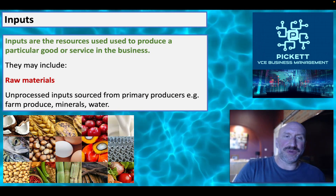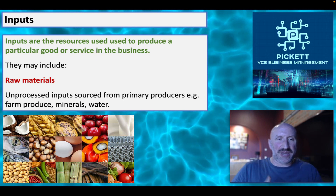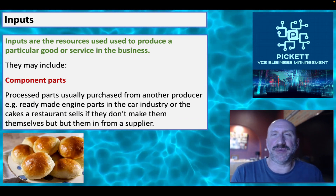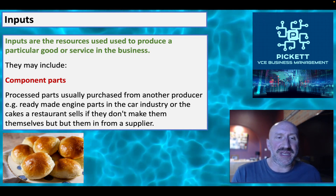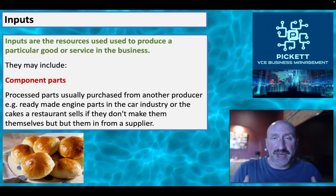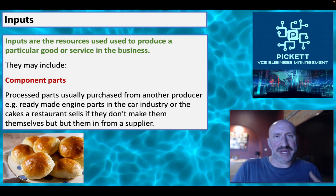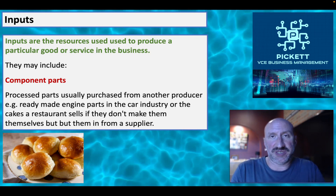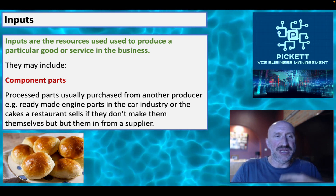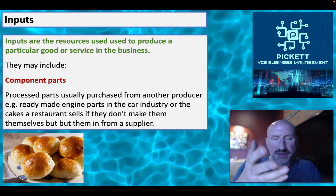Inputs can include raw materials — unprocessed inputs sourced from primary producers, such as farm produce, minerals, water, basic raw ingredients. And component parts — these are processed parts, usually purchased from another producer. For example, ready-made engine parts in the car industry, or cakes a restaurant sells if they don't make them themselves but buy from a supplier. If a restaurant buys its bread from a specialist baker, that bread is a component part. So in terms of material inputs, you have raw materials or component parts.